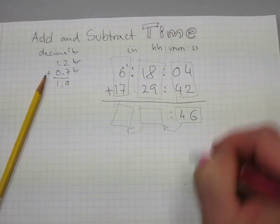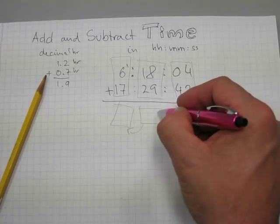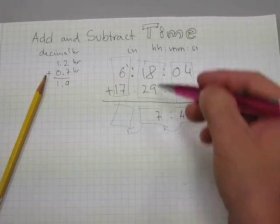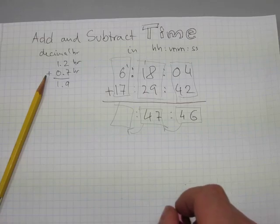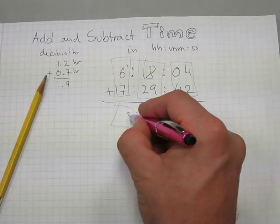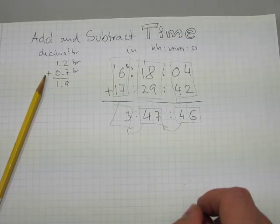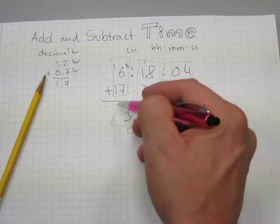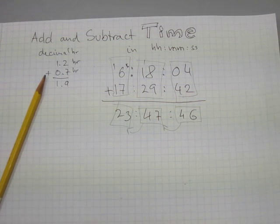Let's see how this works: 4 plus 2 is 6, and 4 plus 0 is 4 — we've got 46 seconds, no trading up necessary. 8 plus 9 is 17, carry the 1; 1 plus 8 is 9, 9 plus 9 is... that's 47 minutes. 6 plus 7 is 13, write the 3 and carry 1; 1 plus 1 is 2. The total is 23 hours, 47 minutes, and 46 seconds.